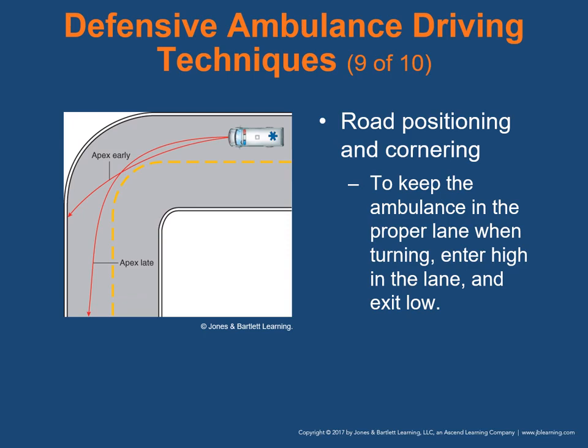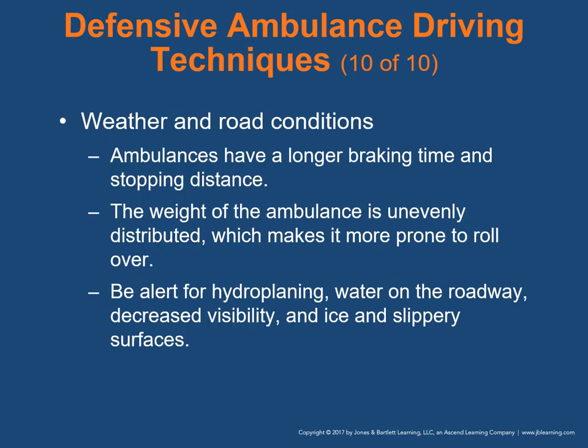Road position means the position of the vehicle on the roadway relative to the inside or outside edge of the paved surface. To keep the ambulance in the proper lane when turning a corner, enter high in the lane to the outside and exit low to the inside. Ambulances have longer braking time and stopping distances than civilian cars. The weight of the ambulance is unevenly distributed, which makes it more prone to rollover — the cab is generally less heavy than the rear patient and EMT equipment compartment, and its high profile makes it susceptible to wind-induced rollover, especially at excessive speed.